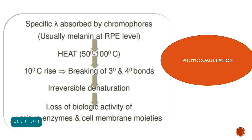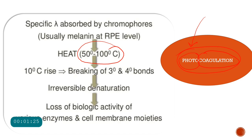What is the principle of applying laser to the retina in diabetic retinopathy? The principle is photocoagulation — photo means light and coagulation means denaturation of proteins. When laser is applied to the retina, it produces temperatures of about 50 to 100 degrees centigrade, and this heat is absorbed by various chromophores or pigments present inside the retina.